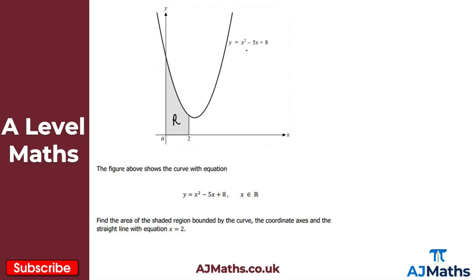We're integrating x squared minus 5x plus 8 with respect to x between 0 and 2. Going term by term: x squared integrates to x cubed over 3, minus 5x integrates to minus 5x squared over 2, and plus 8 integrates to 8x.